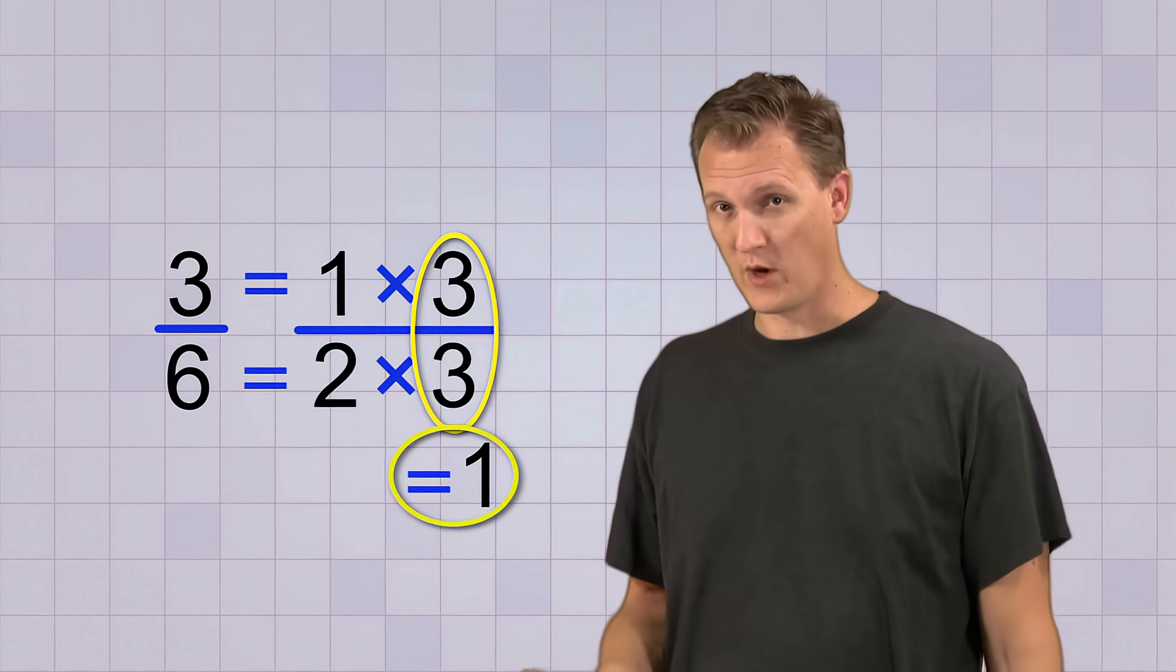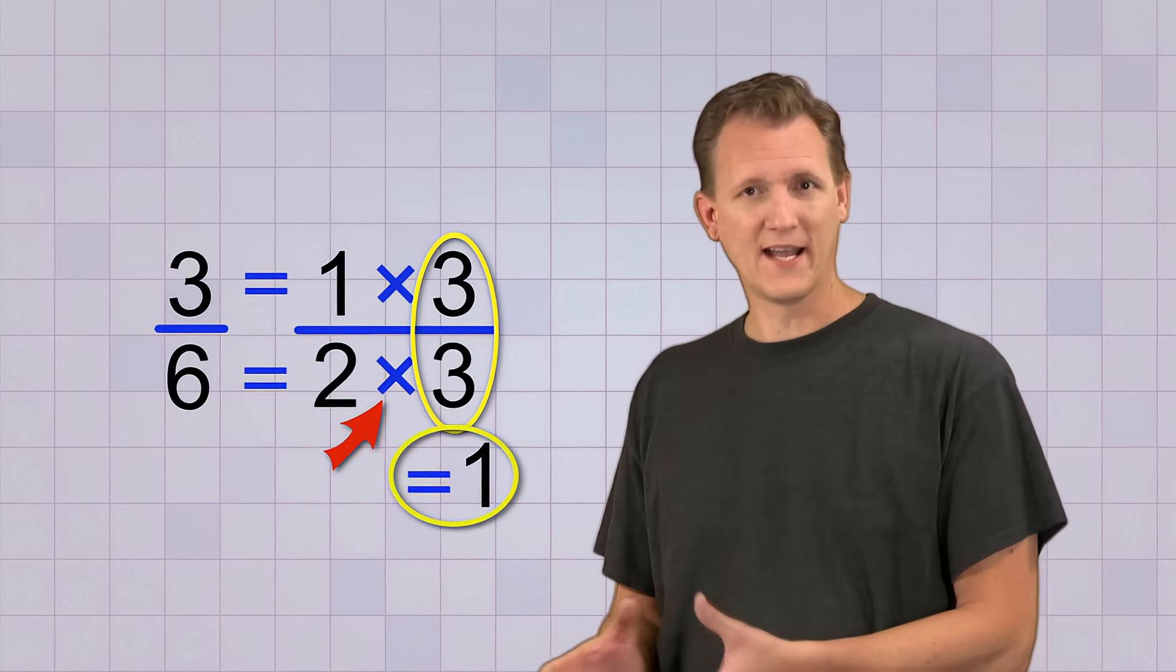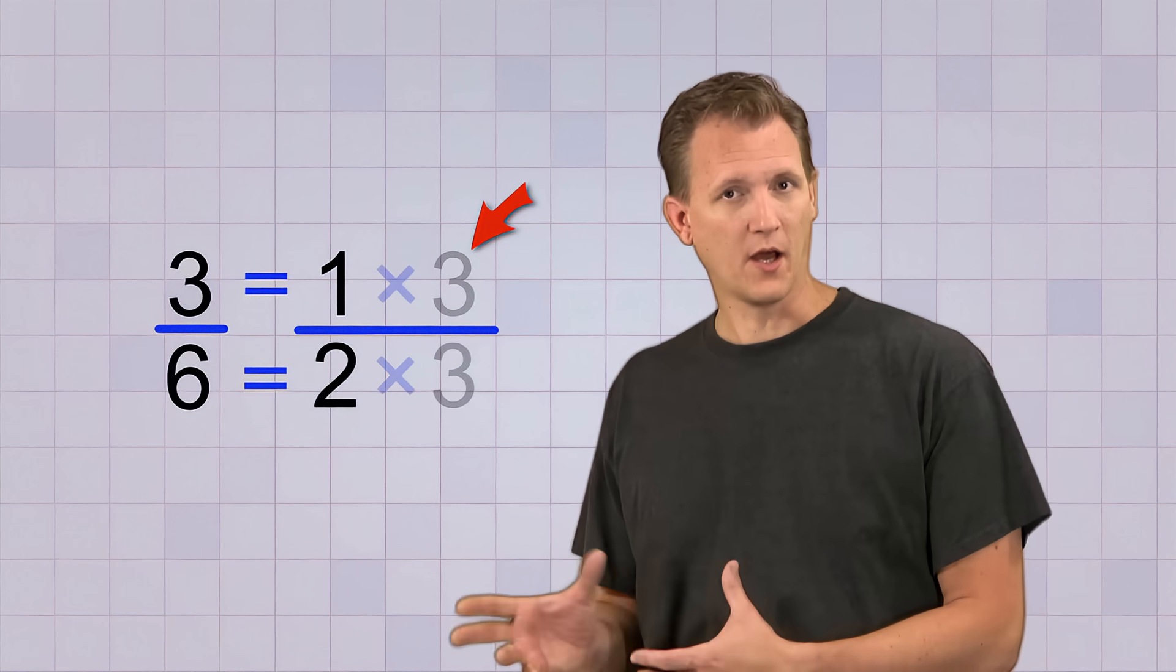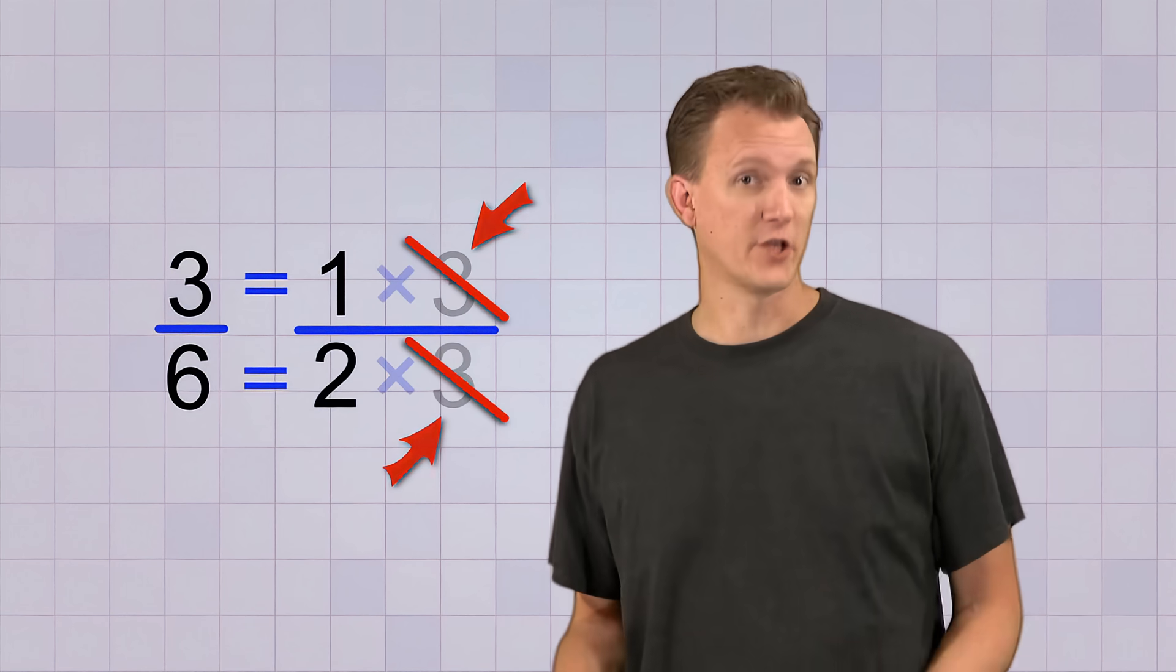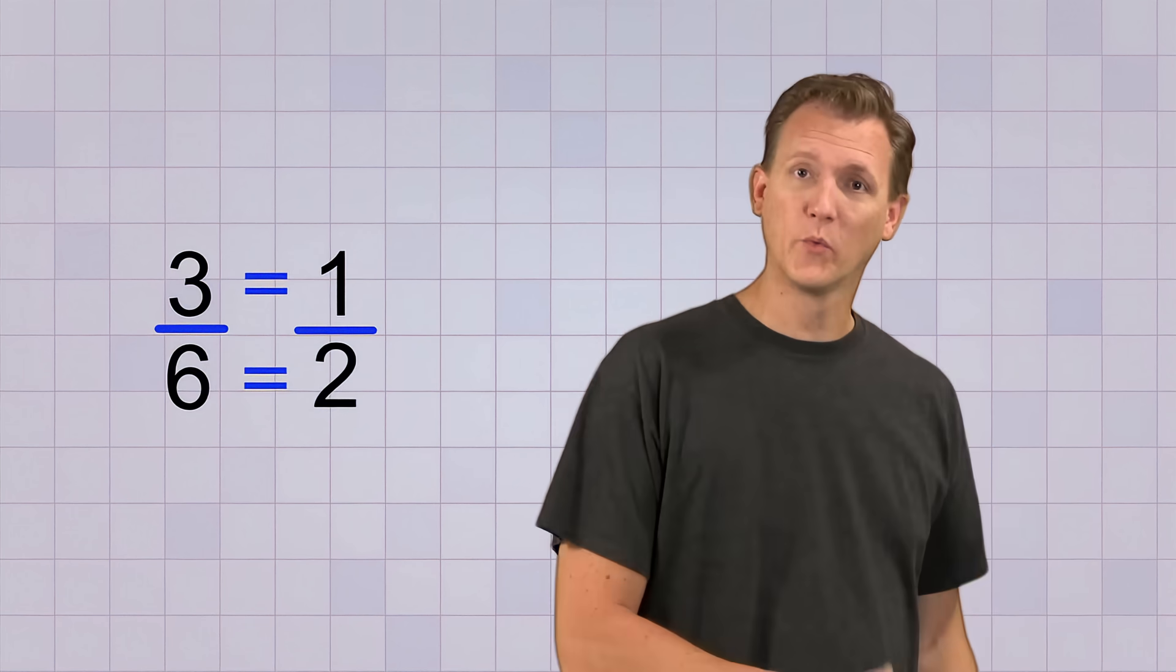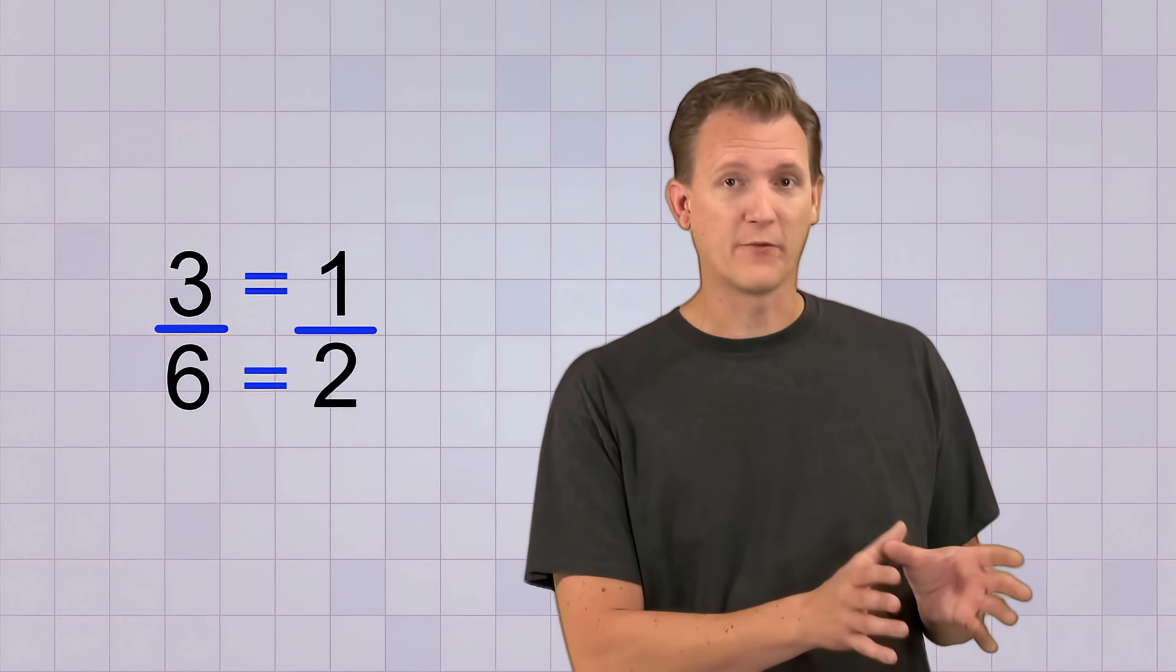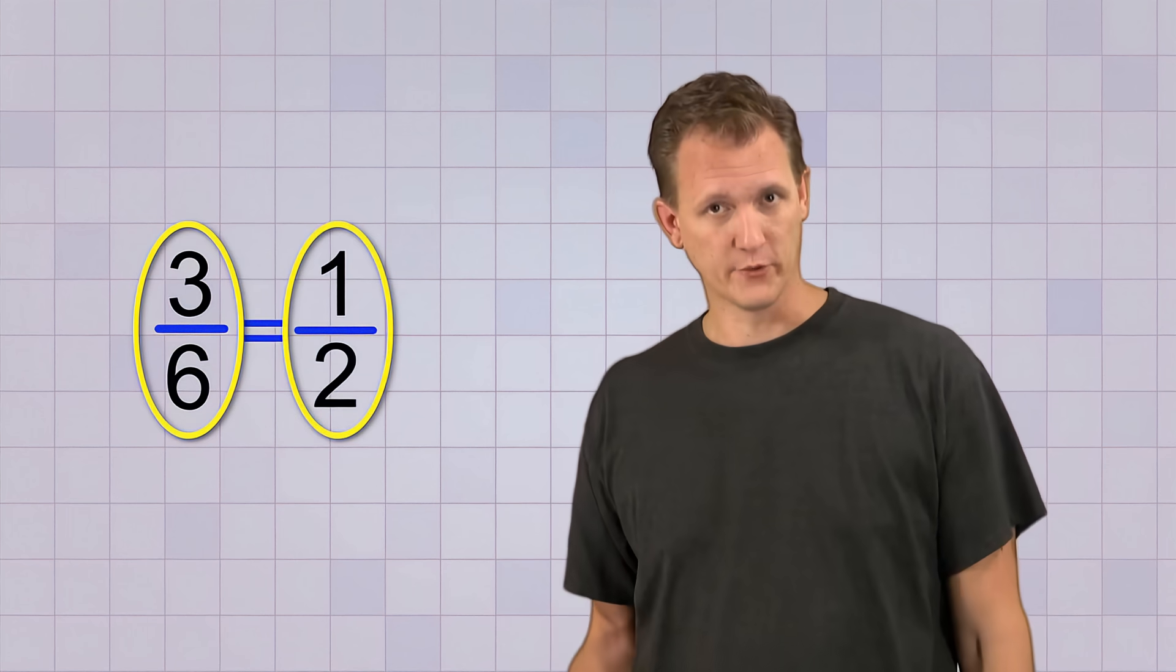Now here's the interesting part. Since 3 over 3 equals 1, and multiplying by 1 has no effect on a number, we can just get rid of that 3 over 3. Basically, the 3 on the top and the 3 on the bottom cancel each other out. And once they're gone, we're left with the fraction 1 over 2.